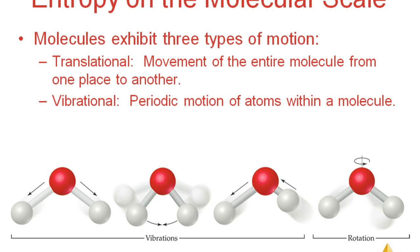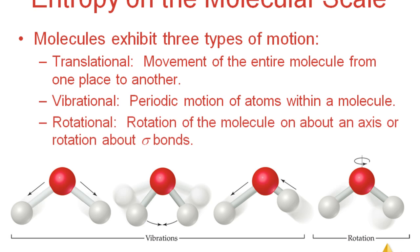The third type of motion is rotational motion — rotation of the molecule about an axis. Think of a spinning top: you put it on the ground and it keeps rotating on its axis. In the same way, molecules can rotate about an axis. So those are the three major types of motion: translational, vibrational, and rotational.